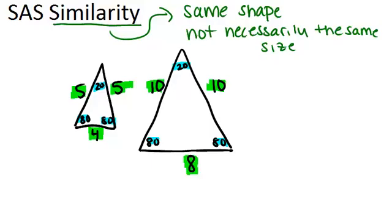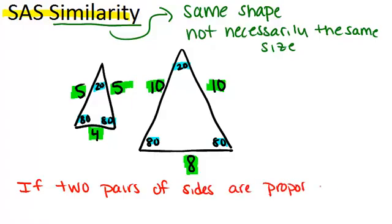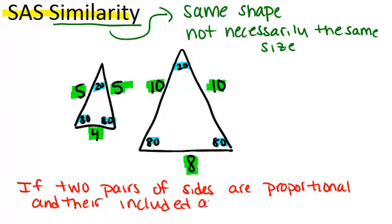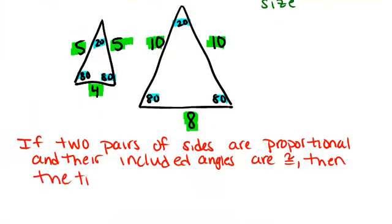And one of those shortcuts is SAS similarity. And what that says is if two pairs of sides are proportional and their included angles, which means the angles in between the two sides that we're talking about, if those angles are congruent, then the triangles are similar. So this is SAS because it's talking about a side, an angle, and a side.